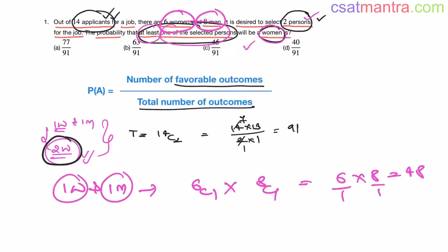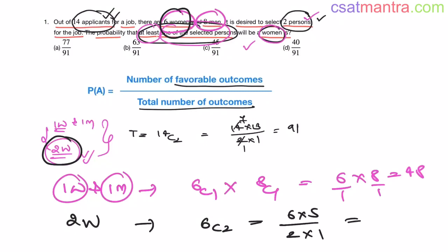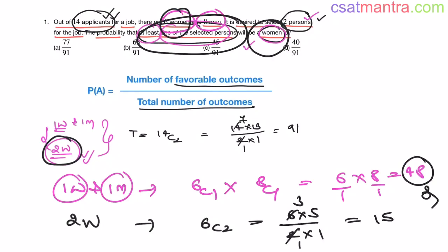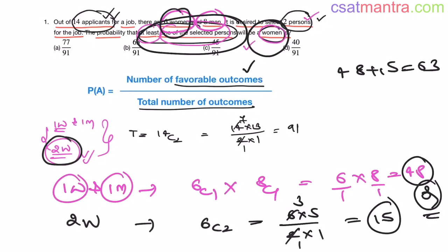Second case: both selected persons are women. Out of six women you have to select two women: 6C2 = 6 × 5 / (2 × 1) = 15. To fulfill the criteria of at least one woman, we take case 1 OR case 2, so we add them. Total favorable outcomes = 48 + 15 = 63. Probability = 63/91.